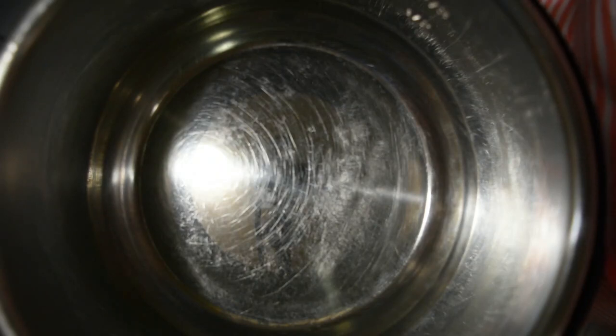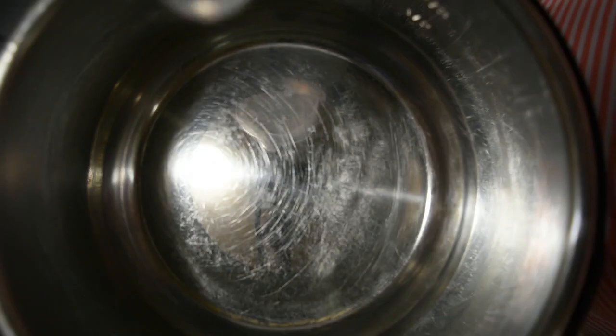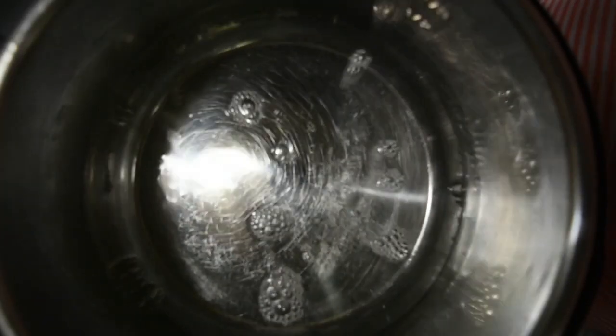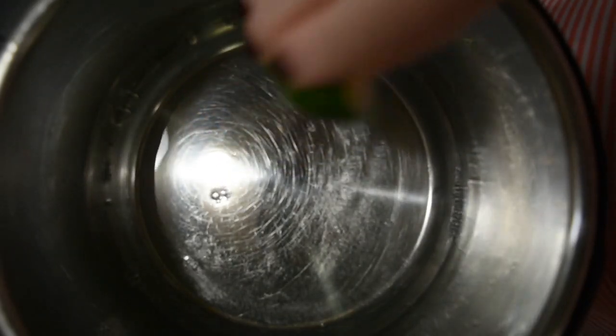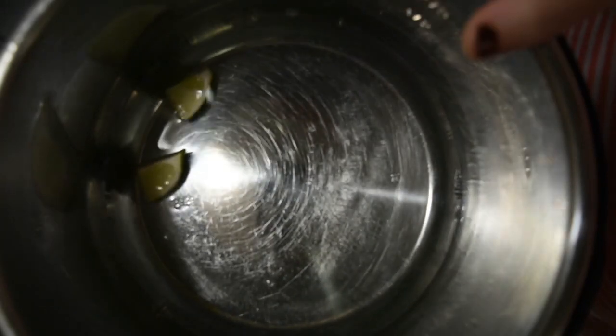So to begin with I am going to put like 600 ml or like 3 cups of water to my instant pot. To this instant pot I am putting couple of wedges of lime. This is an optional step but it keeps your instant pot, the inner pot very clean.